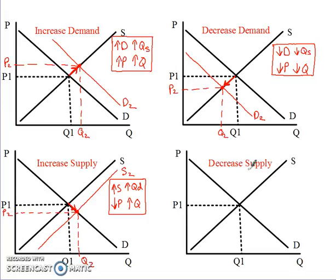Now, how about when we get a decrease in supply? Decrease means left, supply means the supply curve shifted, so the supply curve is going to shift to the left. Remember, that is not an increase — I know it looks like the curve went up, but no, that is a decrease. The curve shifted left, that is a decrease in supply. Find the new intersection point — that's your new equilibrium. Come over and mark your price as P2 and your new quantity as Q2.